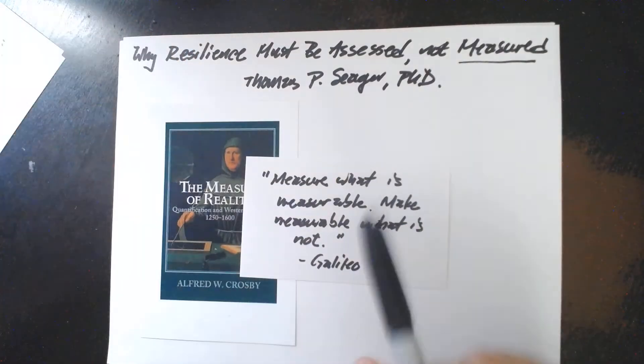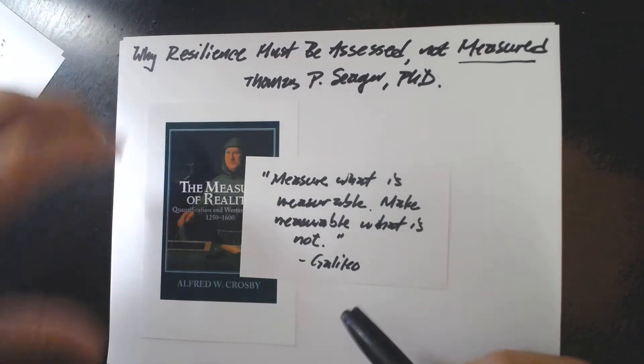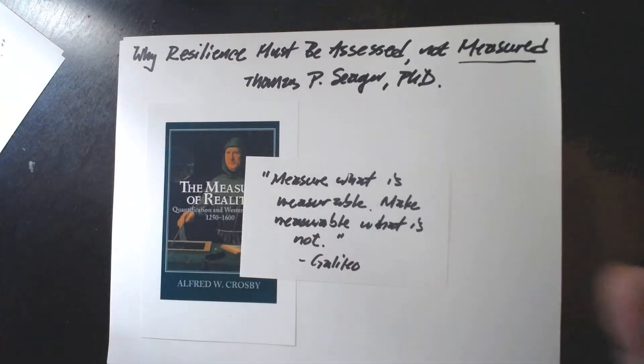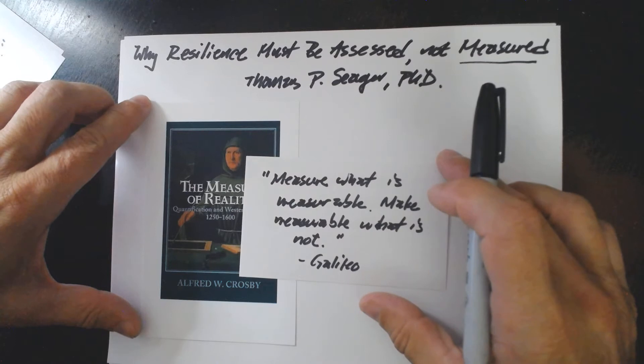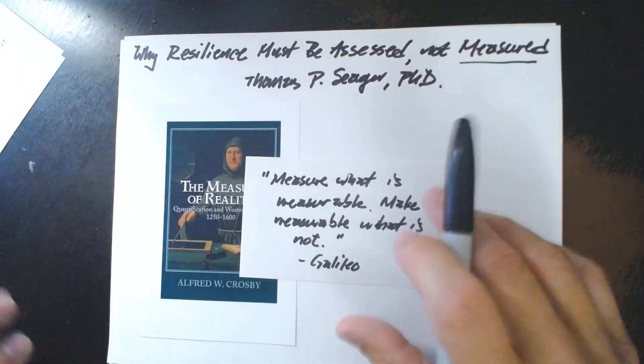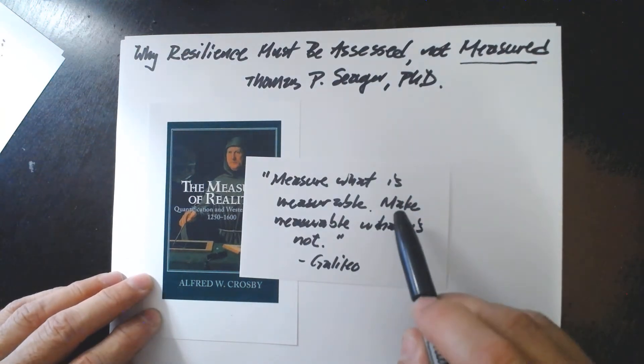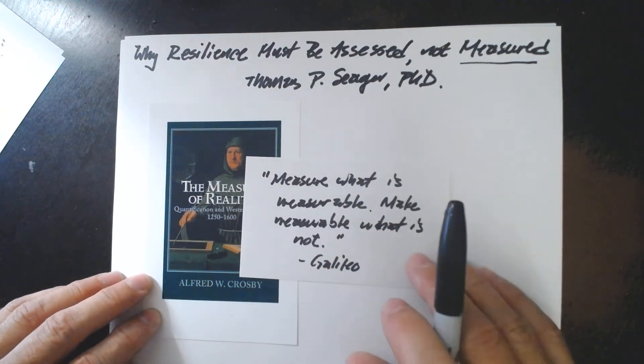Sure enough, it was Galileo who said, measure what is measurable and make measurable what is not. This idea of measurement and quantification was necessary for the revolution that Galileo helped usher in with his methods of building models that make predictions and can be empirically falsified.